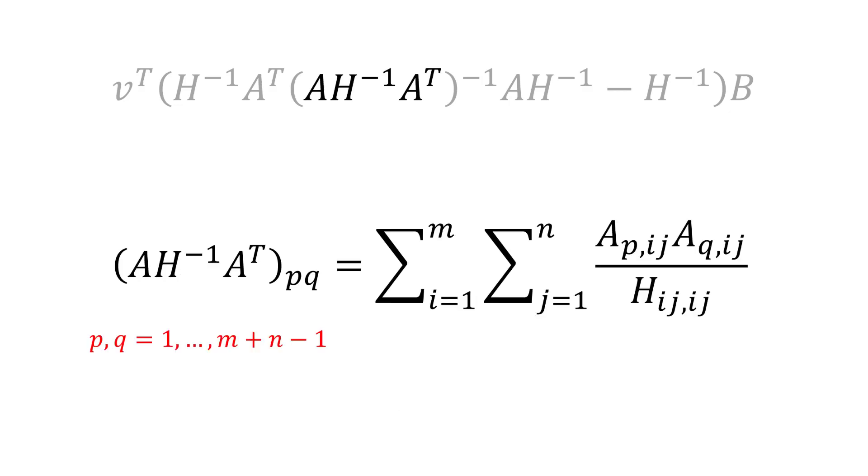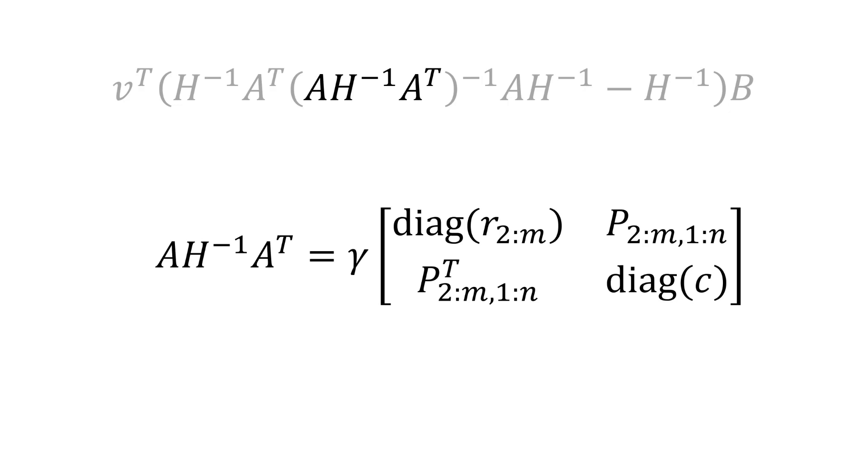Consider the expression A H inverse A transpose. We can readily see that this is a square matrix of dimension m plus n minus 1 by m plus n minus 1. Each entry can be written as the double summation shown. The resulting matrix has a very simple structure composed of four sub-matrices. Diagonal matrices for the 1,1 and 2,2 blocks, and the matrix p and p transpose for the 1,2 and 2,1 blocks, respectively. Here the first row and column are removed, consistent with the first constraint being removed from A, as discussed earlier.